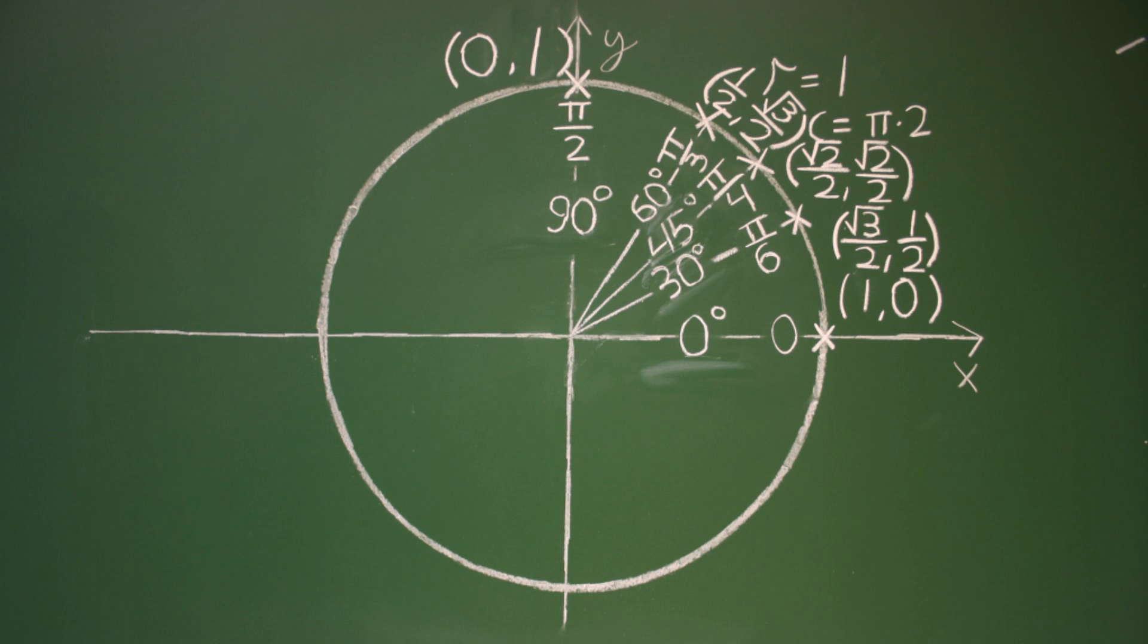0, 30, 45, 60, 90, that's why I love unit circle trigonometry. 0, 30, 45, 60, 90, that's why I love unit circle trigonometry.